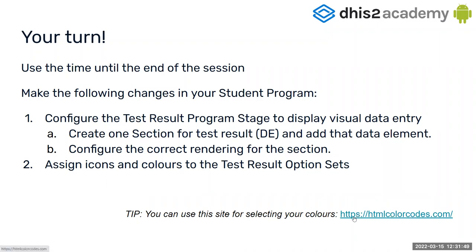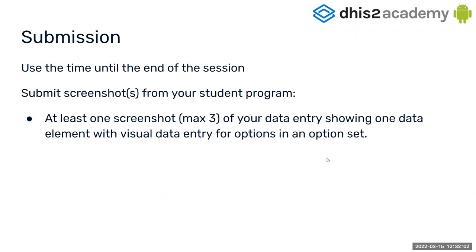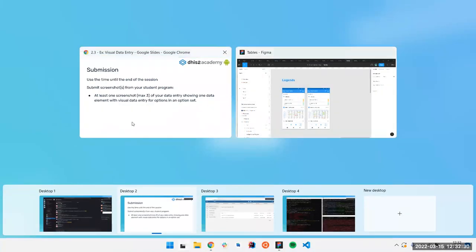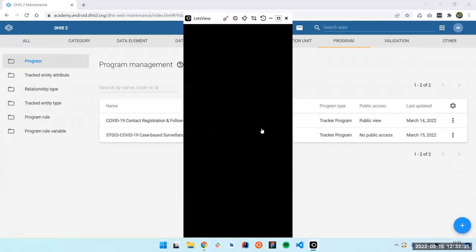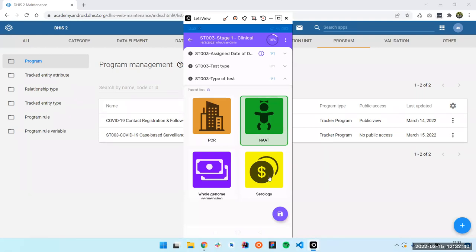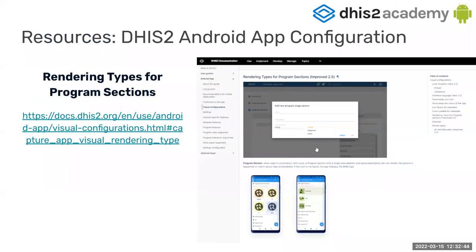You already have the option set created and the data element created. Be sure that they are linked, and then assign the icons and colors to the options of the option sets. Be sure you have the correct configuration in the section — remember you have to put matrix or sequential in the section if you want to see the results. Here you have the HTML color codes website shown before; you can click and select different colors. For the submission, in this half an hour you have to submit at least one screenshot, maximum three, showing that data element with visual data entry — the different icons and colors. If you need more documentation, it's also here; you can type here and go to the documentation to see how it's done.